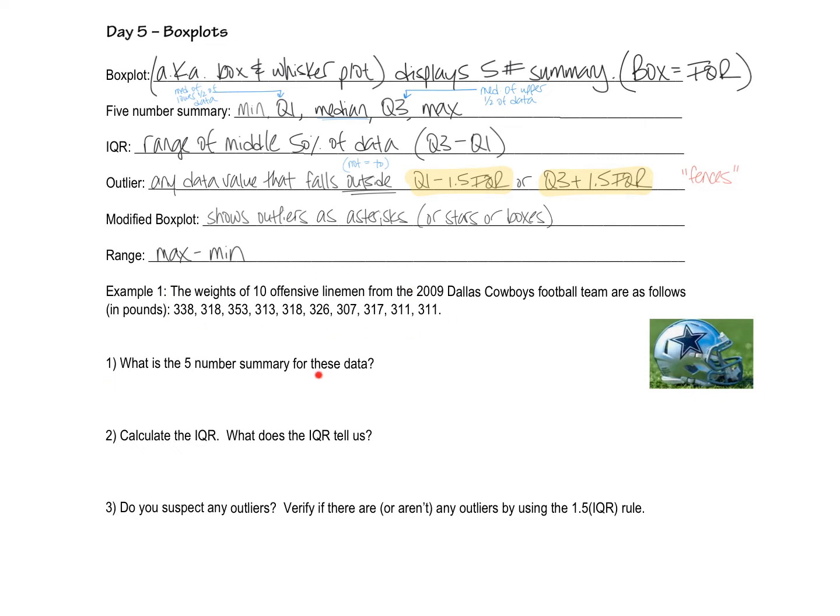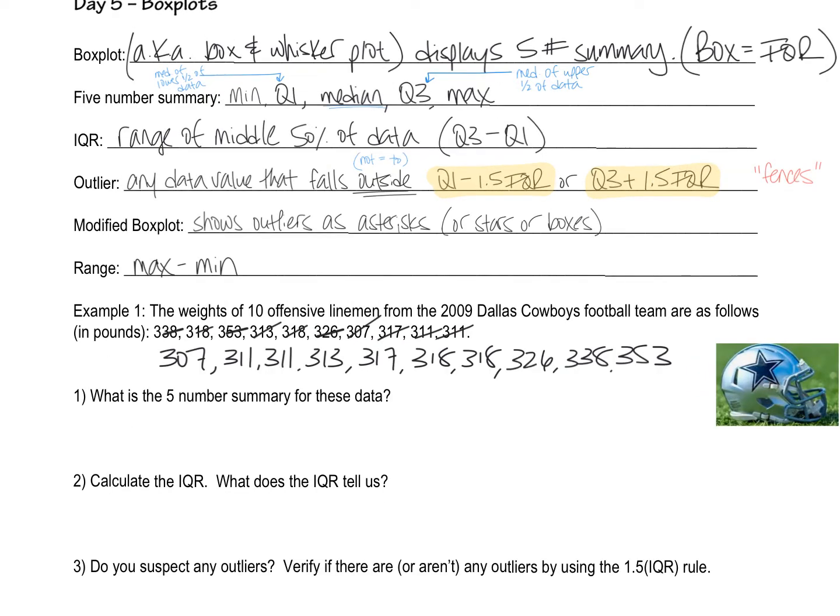And so to come up with a five number summary, the best thing I'm going to do is definitely put these numbers in order. And so here I actually wrote them in order so I can easily tell my minimum, my maximum, and other stuff in between. So since we have 10 data values here, I do not have a middle number, which means I'm going to have to average these two together. So that's just 317 and a half. That's going to be my median.